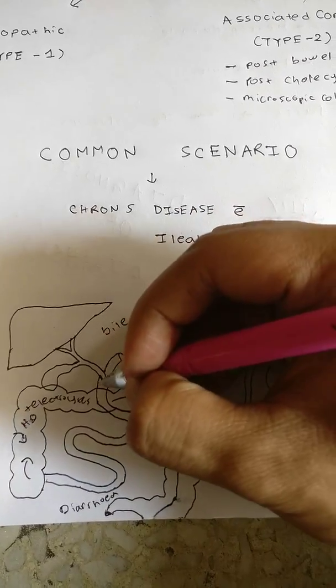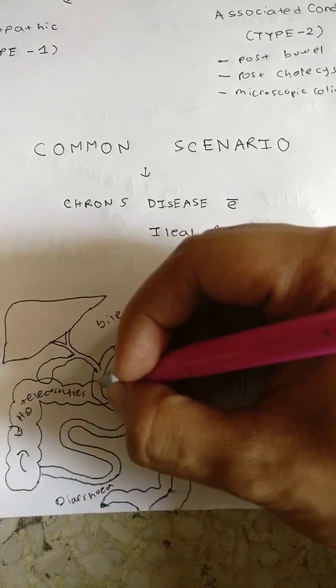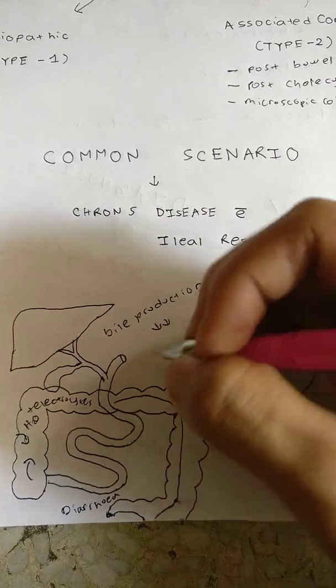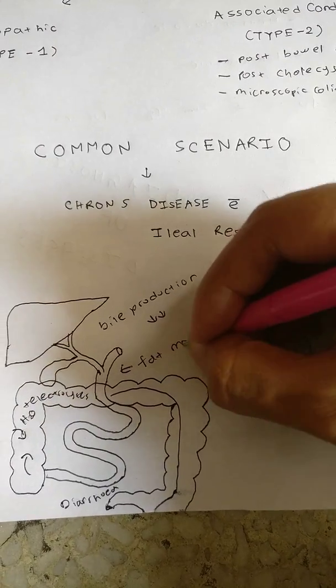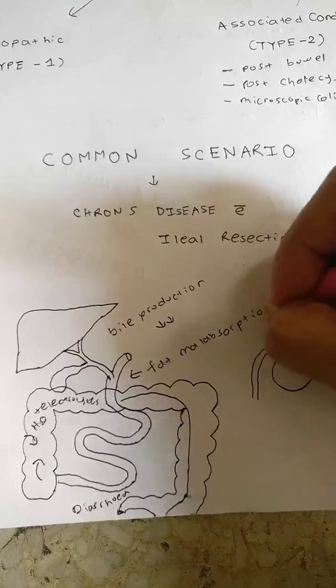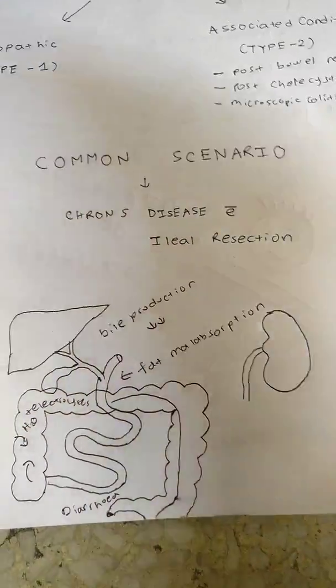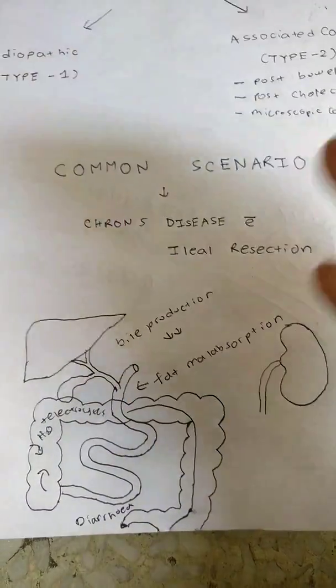Since the bile salts can't get back into the liver, the amount of bile production decreases. When bile production decreases, it doesn't contain as much bile salts as needed, therefore there occurs fat malabsorption due to impairment of micelle production.